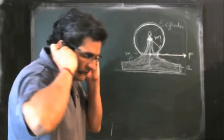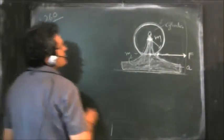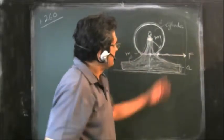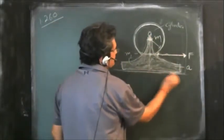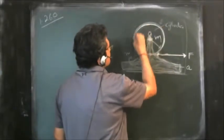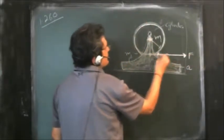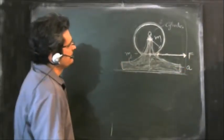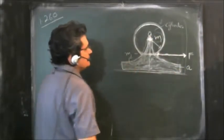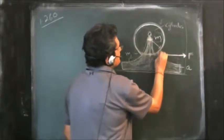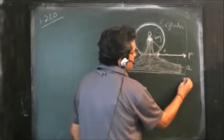We'll solve the Irodov problem 1.260. In this problem we are given a cylinder which is mounted on a mechanism that can move along the surface without any friction. There is a thread or rope encircling the cylinder with negligible mass and it is being pulled with a constant force F. This cylinder has mass m1 and the mechanism has mass m2. We have to find the acceleration of point K on the thread and also the kinetic energy of the system after time T.